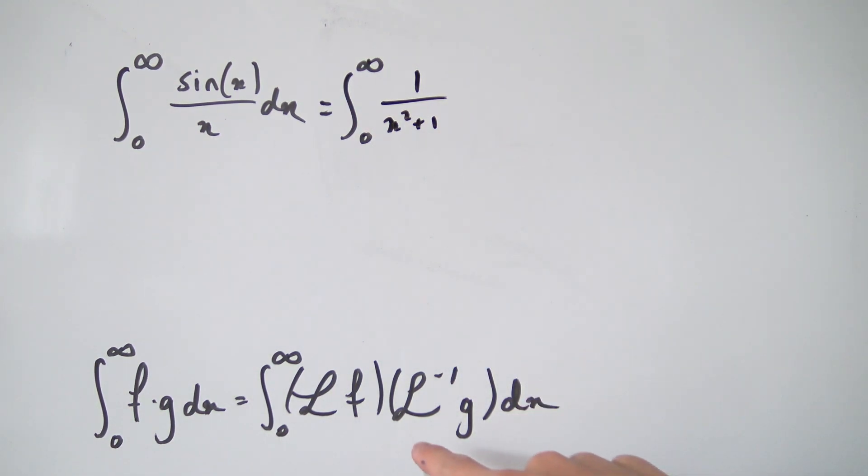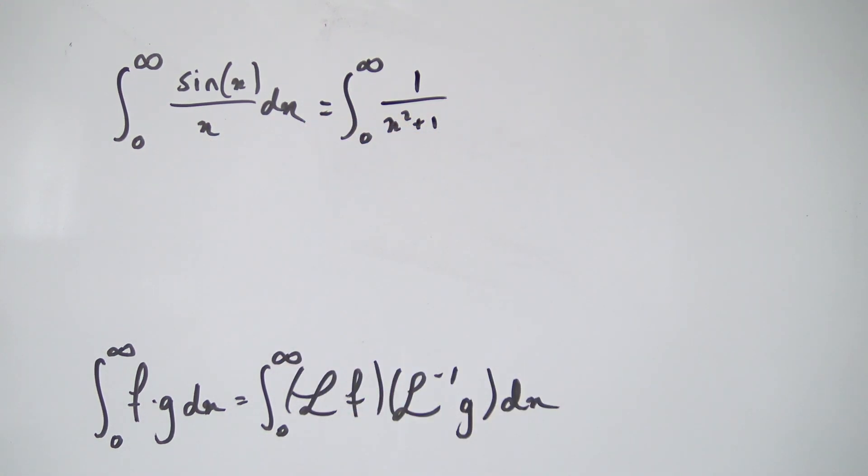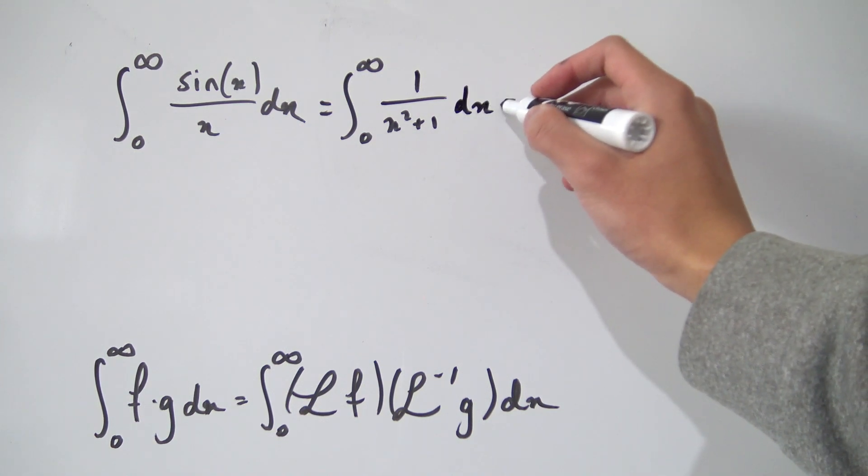the inverse Laplace transform of g, which is inverse Laplace transform of this 1 over x right here, which just becomes 1 in the end, so nothing really changes there, dx.